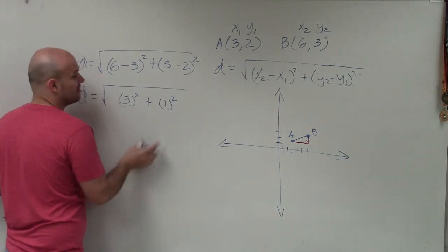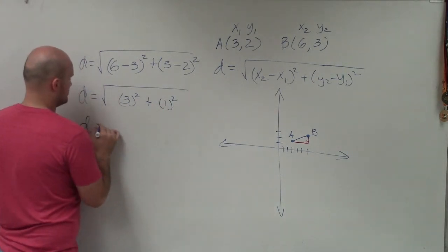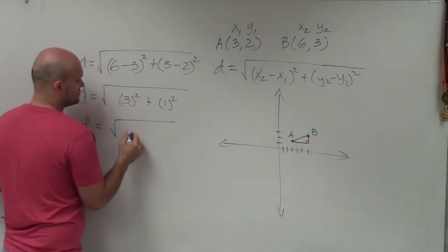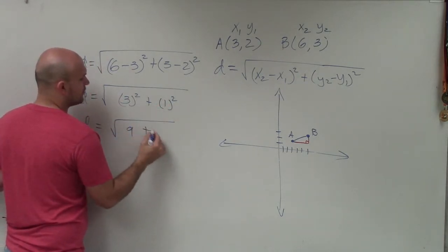Now, again, applying my order of operations, I'm going to square each term. So d equals 3 squared, which is 9, plus 1 squared is just 1.